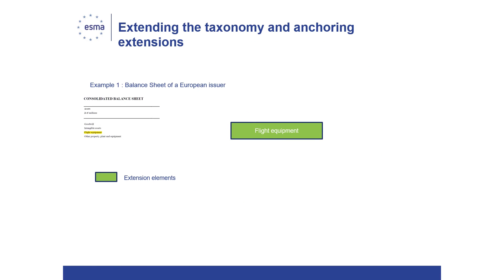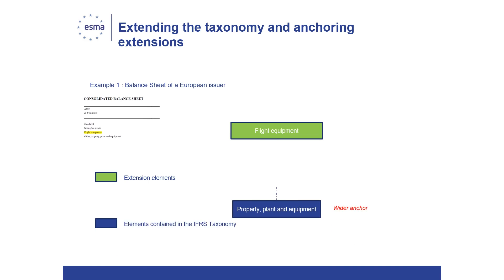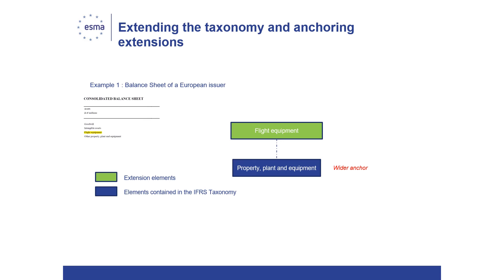If an issuer discloses in its financial statements an element which has no close match in terms of accounting meaning in the base taxonomy, then an extension needs to be created. In this case, the element flight equipment is our extension taxonomy element. The RTS on ESEF further requires that extension taxonomy elements are anchored to the closest wider base taxonomy element existing in the taxonomy — in this case, property plant and equipment. By linking the extension to the base taxonomy element, the preparer will provide end users with a better understanding of the meaning of extensions, and facilitate its usability in large-scale automated data analysis.